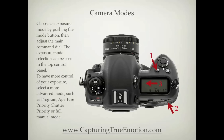Choose an exposure mode by pushing the mode button, then adjust the main command dial. The exposure mode selection can be seen in the top control panel. To have more control of your exposure, select a more advanced mode such as program, aperture priority, shutter priority, or full manual mode.